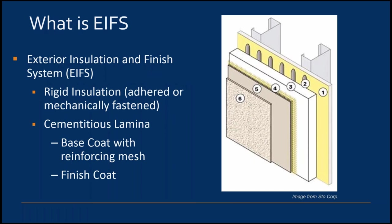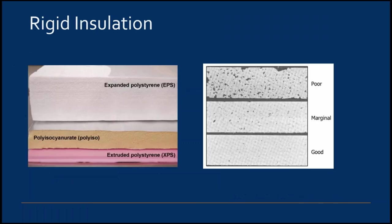There are a few different EIFS assemblies, but they all consist of rigid insulation covered with a cementitious lamina. It is important to understand that this is a system assembled with proprietary components from the EIFS manufacturer. You should never mix or substitute different manufacturers' components on a project, as this could void the manufacturer's warranty and will make the EIFS non-code compliant. The typical insulation used is expanded polystyrene, colloquially known as bead board, which I will refer to as EPS.